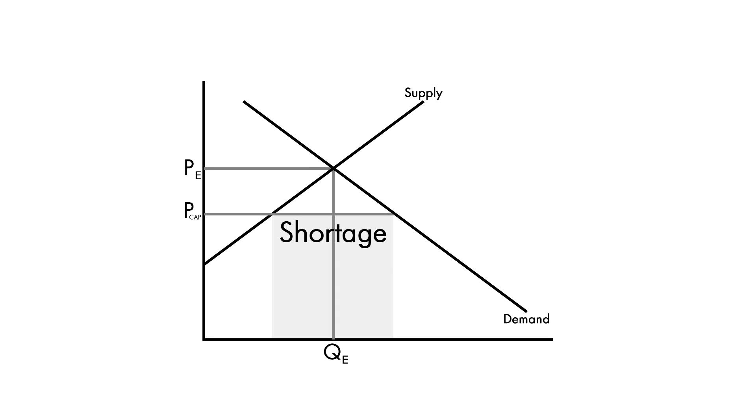Why? Because it forced the price to be set at below the equilibrium level. That means that more people were wanting to buy gas than there was available gas. So what happened was there were these long lines. People were just filling up their cars and boats and every container they could put gas in. They were hoarding it, and they were actually preventing a lot of people from getting gas who really needed it.